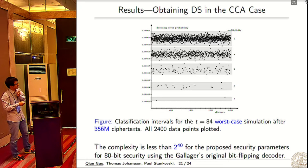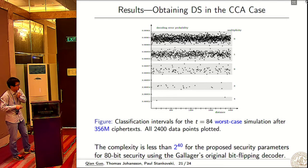This is the result for the CCA case to recover the distance spectrum. We can see these points are grouped according to multiplicity. We need this many ciphertexts, and we do 10 formulations - this is the worst case result. For the proposed security parameters using Gallagher's bit flipping decoder, the complexity is about 2^40.